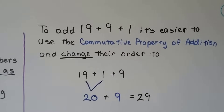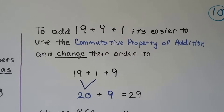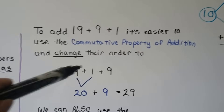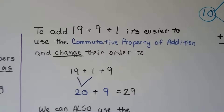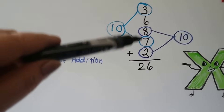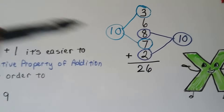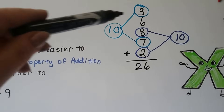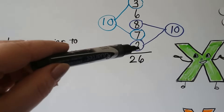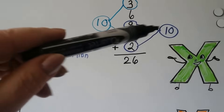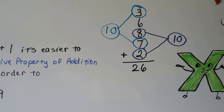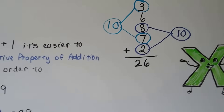To add 19 plus 9 plus 1, it's easier to use the commutative property of addition and change the order. We could put the 1 up front and add 19 plus 1 to get 20, then do 20 plus 9 to get 29. When you have a long list of numbers to add, it doesn't matter what order we add them in. We can group compatible numbers — for example, add 3 and 7 to get 10, and 8 and 2 to get 10, then add 10, 20, and the leftover 6 to get 26. That's much easier than adding in the given order.